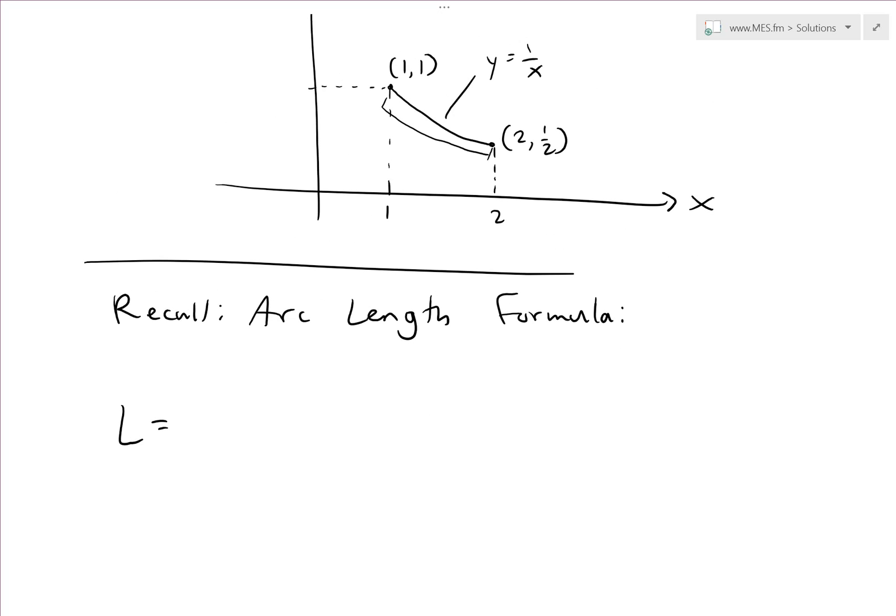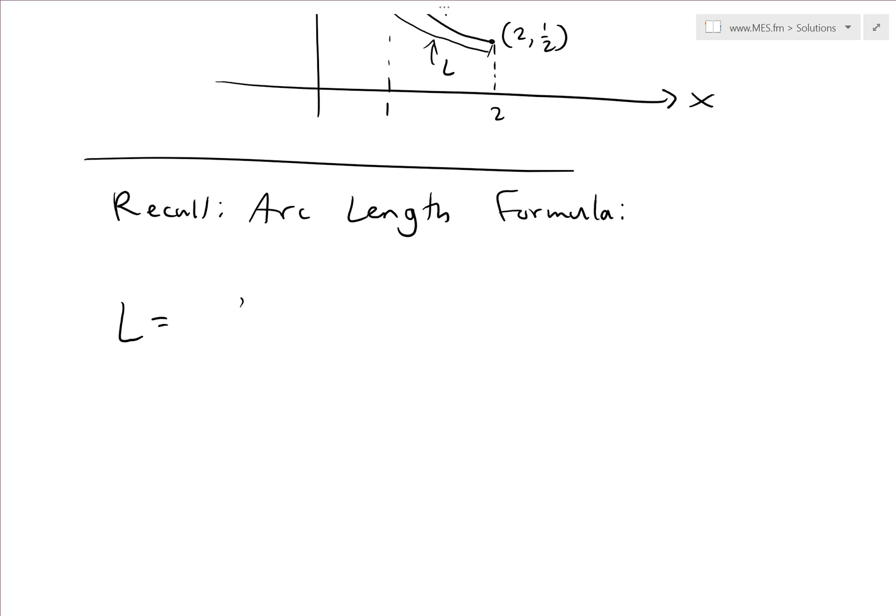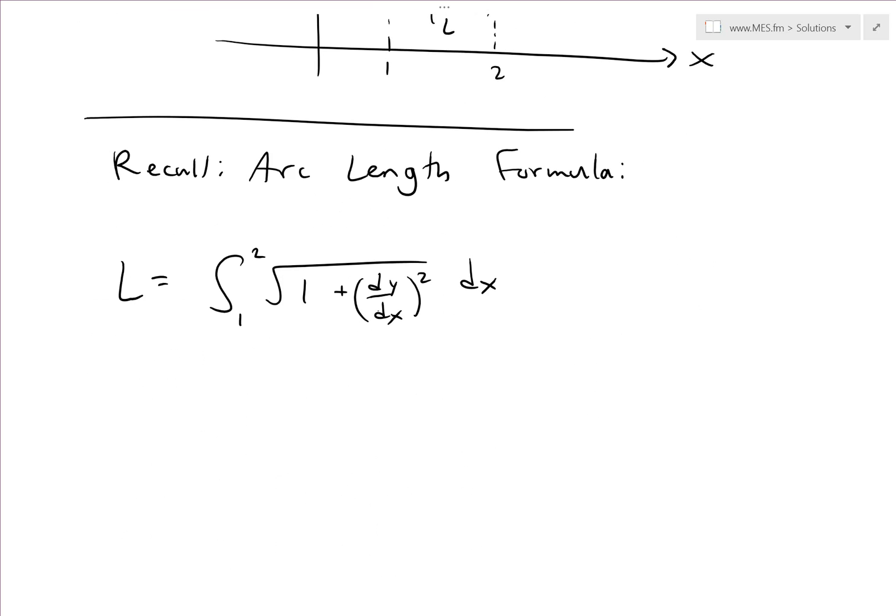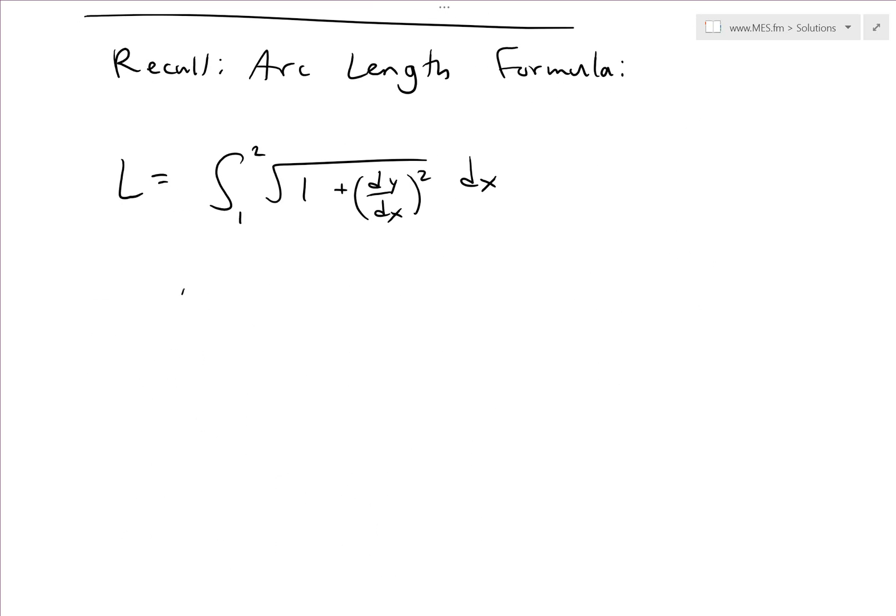So L is equal to the integral from 1 to 2 of square root 1 plus (dy/dx) squared dx right here. And so we have to find out what the dy/dx is. So we know y is equal to 1 over x equals to x power negative 1. I write this easier to take the derivative. So dy/dx equal to, put this down, negative 1, and this goes minus the power. So x negative 2 equals to negative 1 over x squared right here.